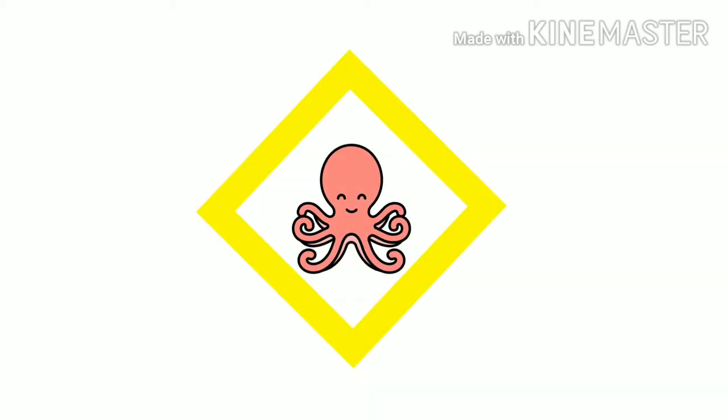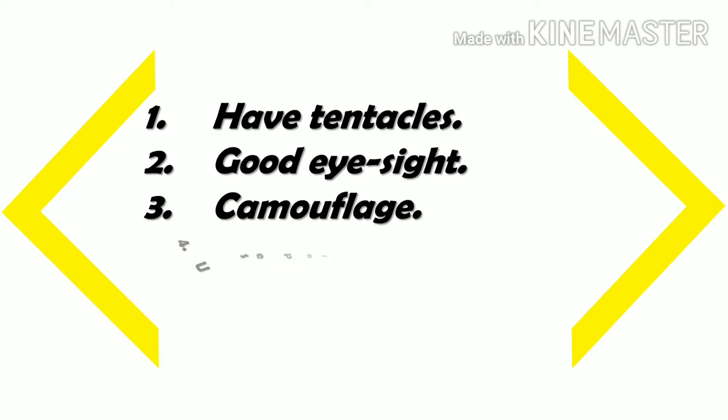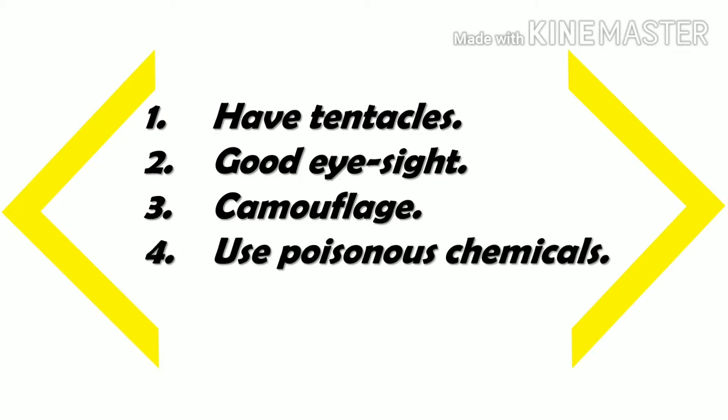Octopus. They have tentacles, good eyesight, camouflage ability, and use poisonous chemicals. Octopus camouflage — when an animal blends into its surroundings. They can change their own color and texture to hide. If they are attacked, they can use poisonous chemicals to hide from predators and kill their prey.